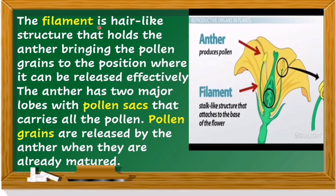The filament is a hair-like structure that holds the anther, bringing the pollen grains to a position where they can be released effectively. The anther has two major lobes with pollen sacs that carry all the pollen grains. Pollen grains are released by the anther when they are already matured. The anther produces pollen, and the filament is the stalk-like structure that attaches to the base of the flower.